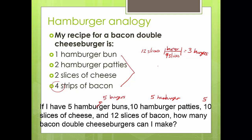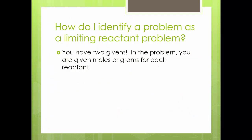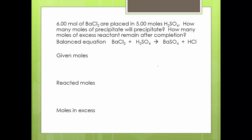You won't have to deal with four things at a time, only two. How do I know if it's a limiting reactant? You have two givens — you're given two values for each reactant. You're no longer going to see those magic words 'given in excess.' Not every problem will be a limiting reactant problem, so you have to identify it. Let's start looking at some of these. I have six moles of barium chloride placed in five moles of sulfuric acid. Barium chloride is a reactant, and sulfuric acid is also a reactant — so I have two givens. That's how you can know. Notice it's not one of the products like a percent yield problem — they're both reactants.